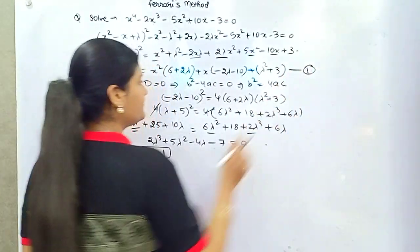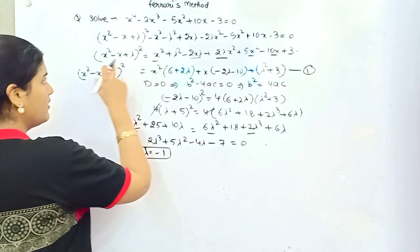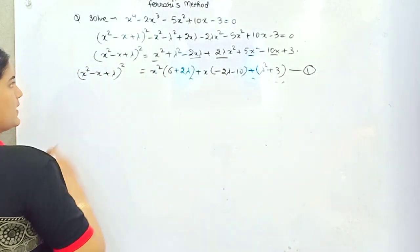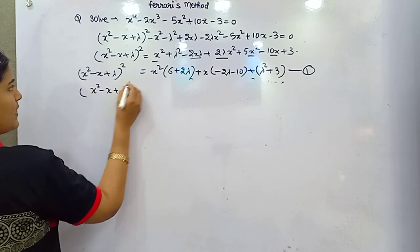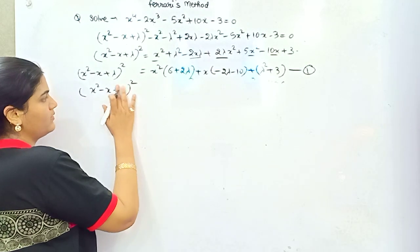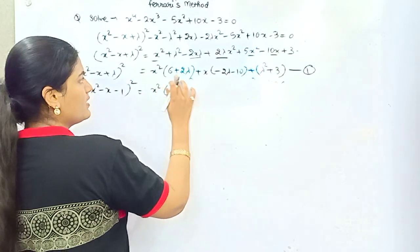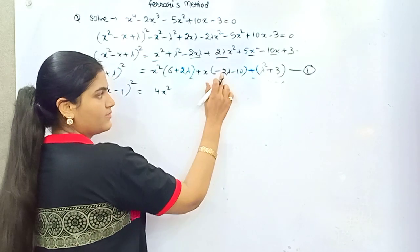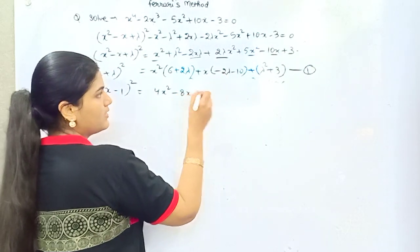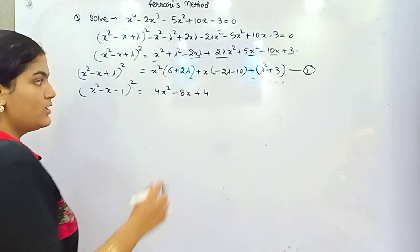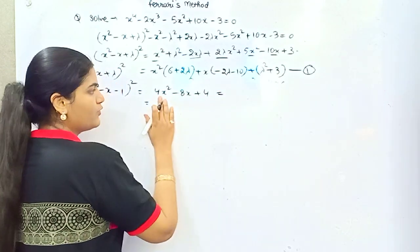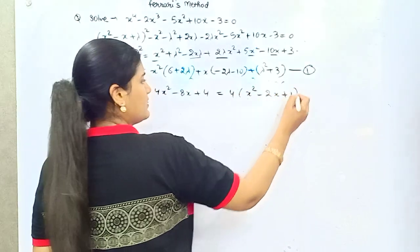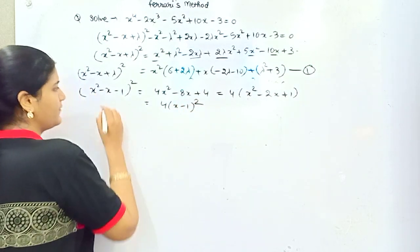Now put lambda = minus 1 into the main equation. With lambda as minus 1, you get (x² minus x + (minus 1))², which gives x² — and substituting: coefficient becomes 6 minus 2 equals 4 — so 4(x² minus 8x plus 4) on the right-hand side, which simplifies to 4 times (x minus 1)² on the right.